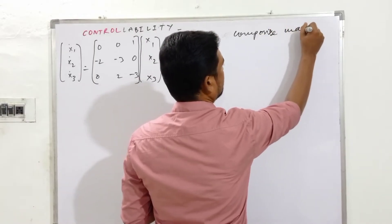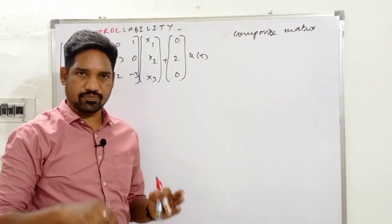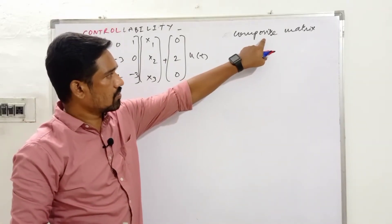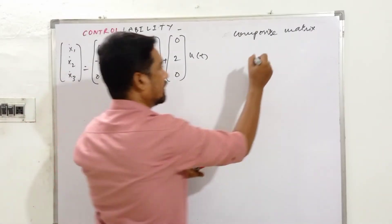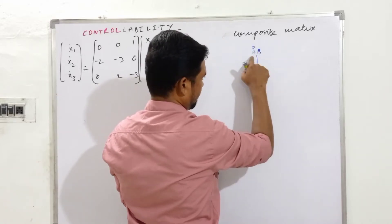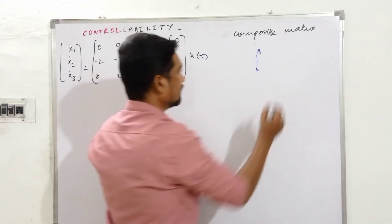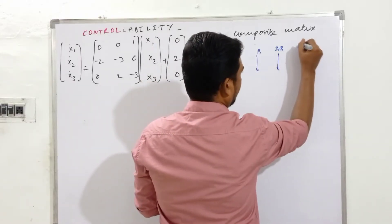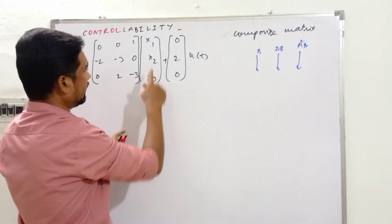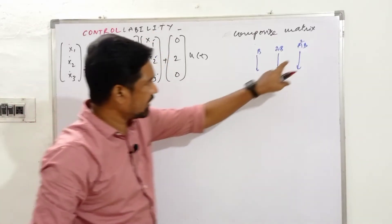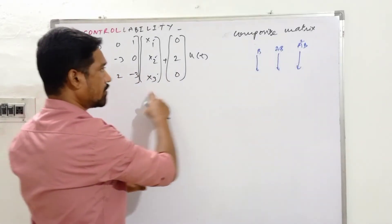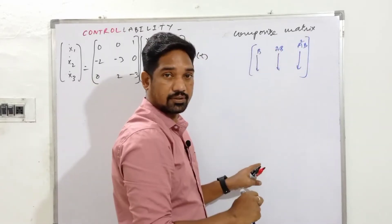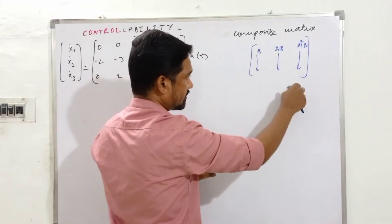Now we form the composite matrix for Kalman's controllability test. The composite matrix is [B, AB, A²B]. So we compute B as it is, then A into B, and then A-squared into B. For a 3rd order system we need these three column matrices assembled together.